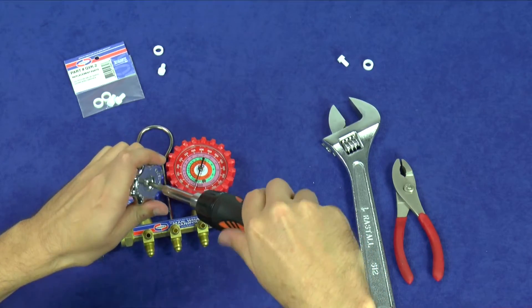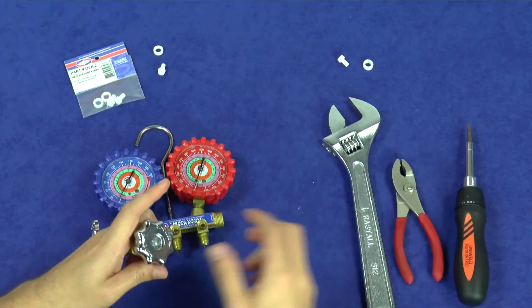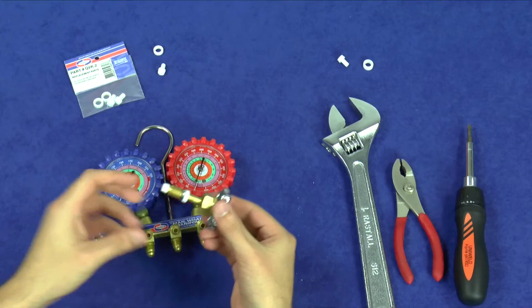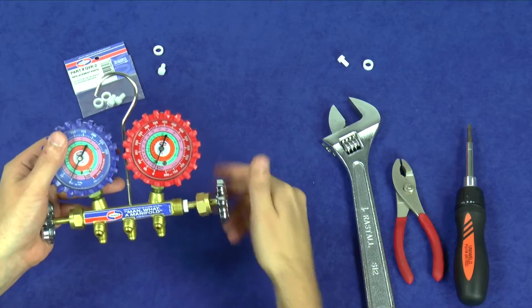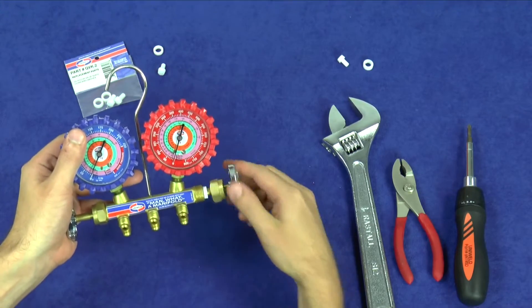Once the Teflon seat and packing washer have been replaced, the valve stem assembly can be reattached to the manifold body by turning the metal hand wheel clockwise. Then tighten the brass packing nut on the manifold body for a complete seal.